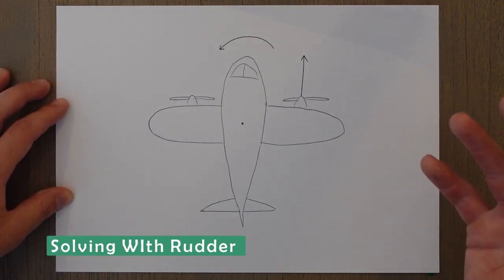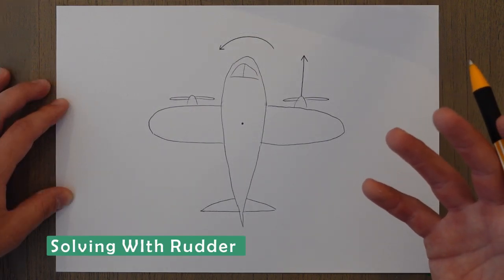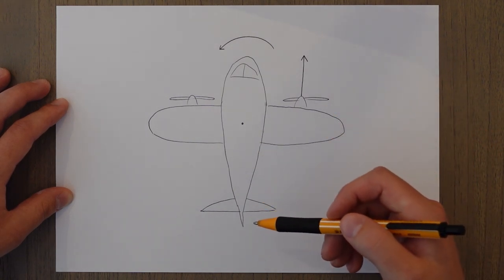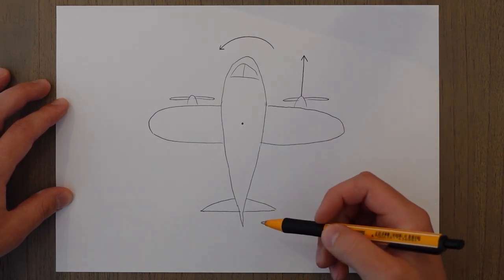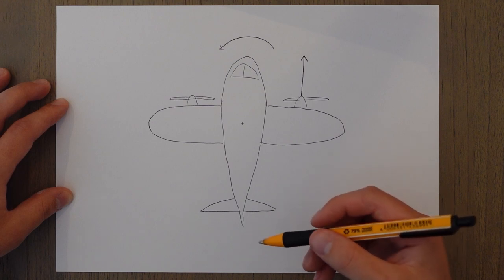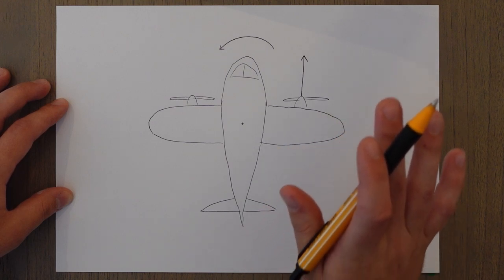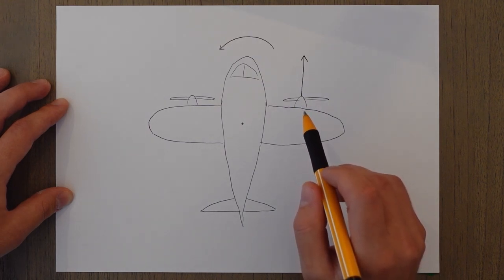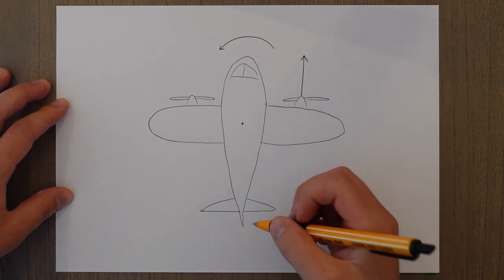To restore the aircraft back to the normal position, we have to create a counter moment. The first way to do this is through using the rudder. We basically apply the rudder in order to create an opposite moment and we press it towards the live engine.